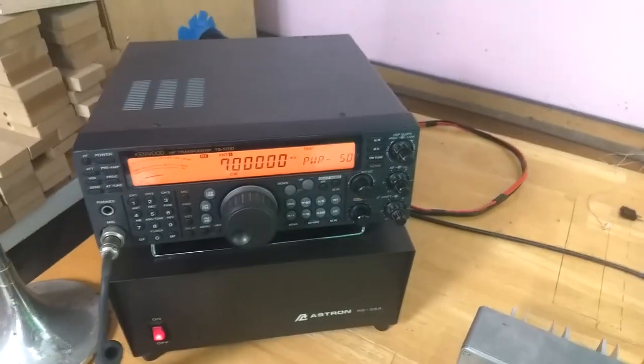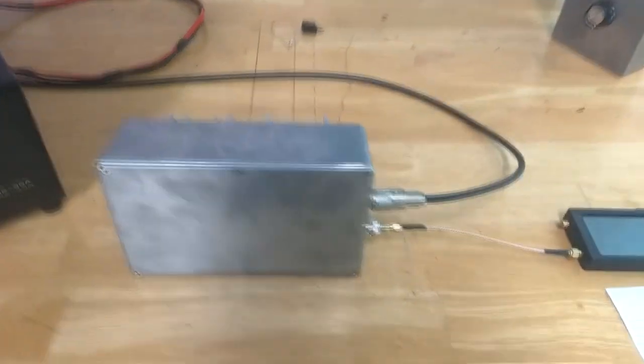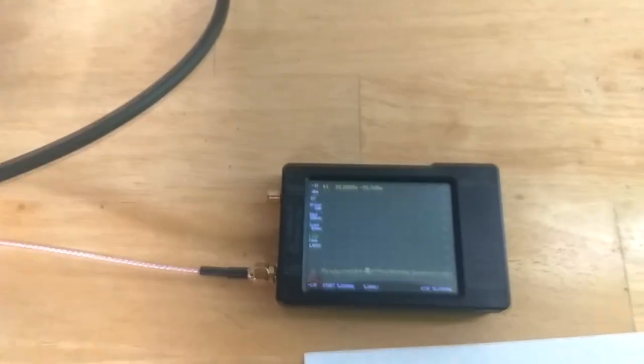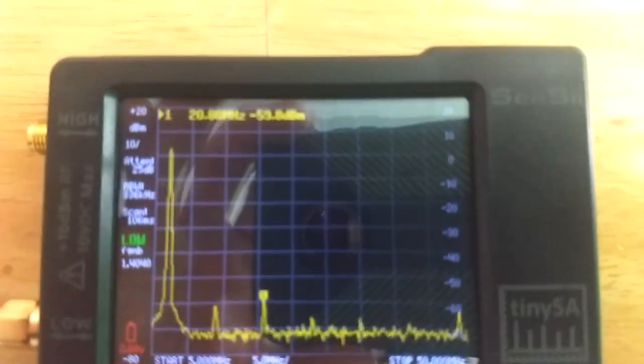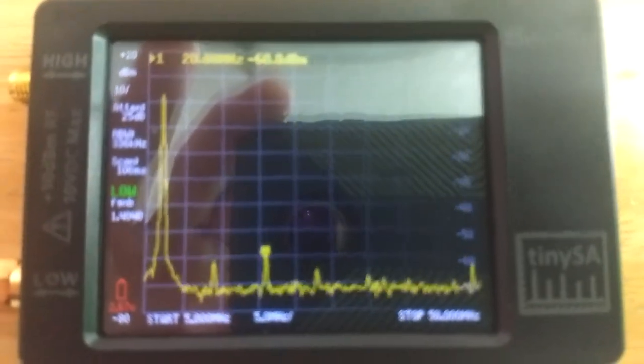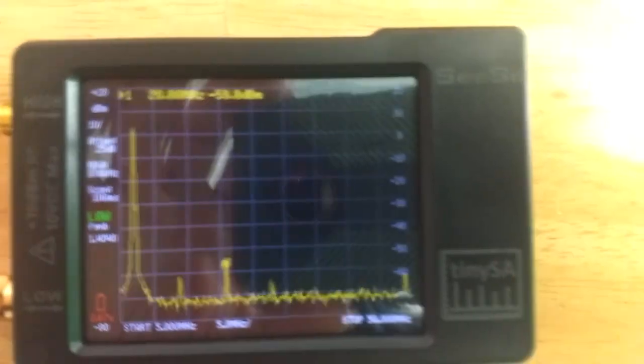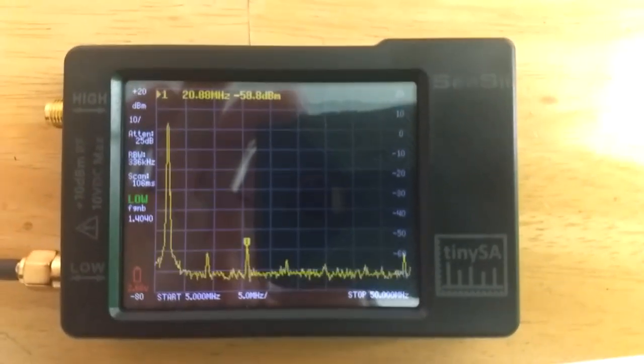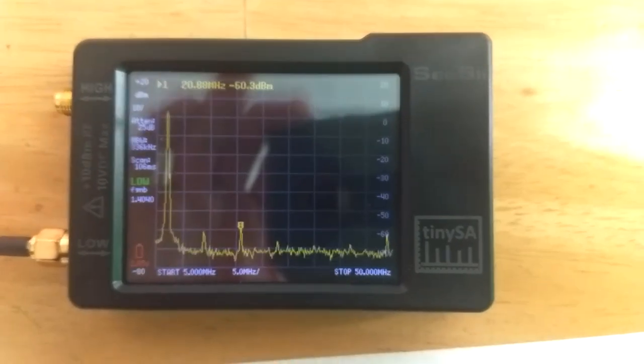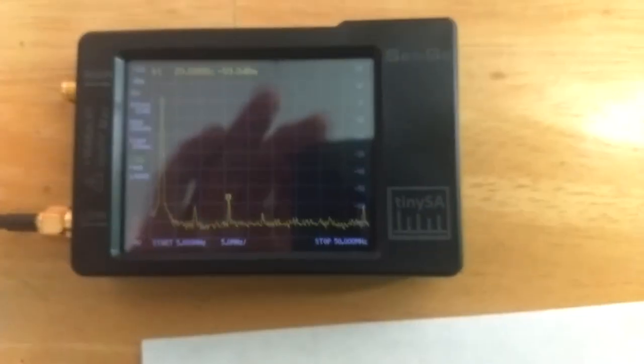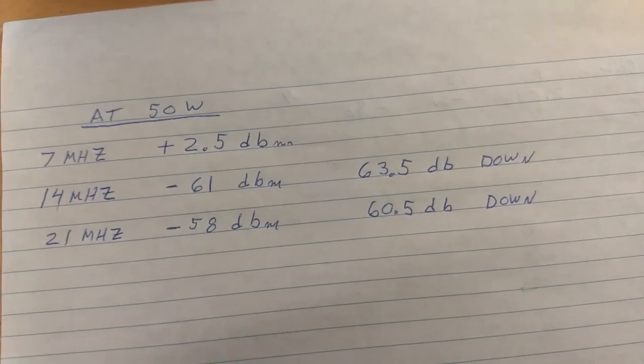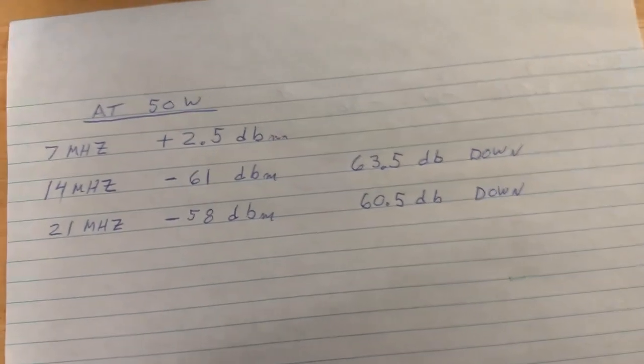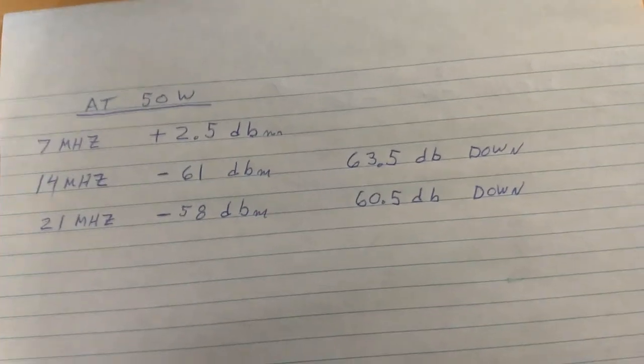Here's our setup to test the harmonic content of the output of the TS-570. Got the antenna output connected to the dummy load, and our tap is fed to the tiny spectrum analyzer. Power is set at 50 watts. There's the spectrum. You can see the fundamental is the big peak on the left, and then the various peaks to the right are the various harmonics. The second harmonic is 63.5 dB down, and the third harmonic is 60.5 dB down from the fundamental. So this transmitter is well within the FCC requirements.